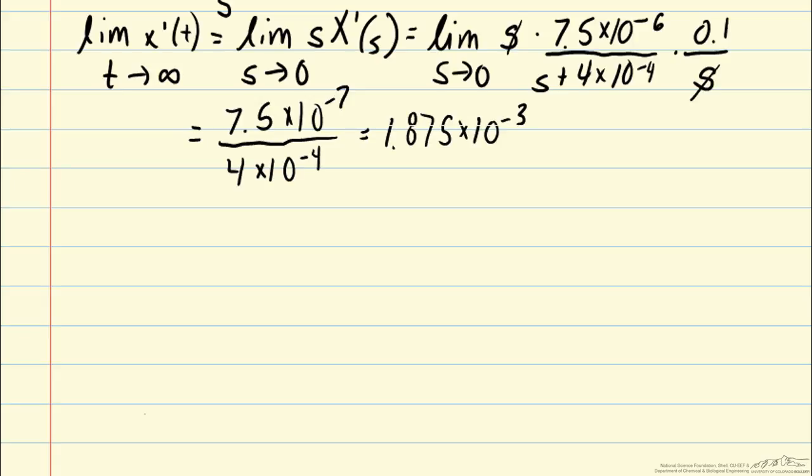Now we can apply a similar analysis to the volume in the tank. The problem is that we know from previous videos that the volume in the tank is not going to be bounded under this step input. If we increase the inlet flow but we don't change the outlet flow, then we will have a linear increase in the volume in the tank. So the assumptions of the final value theorem do not actually apply.